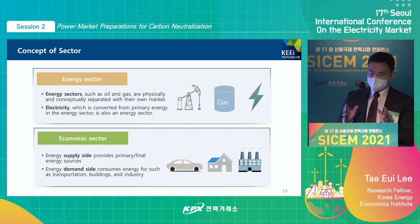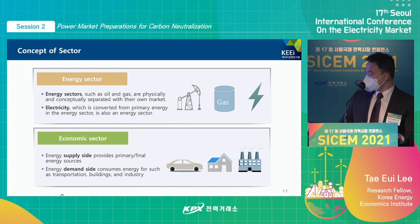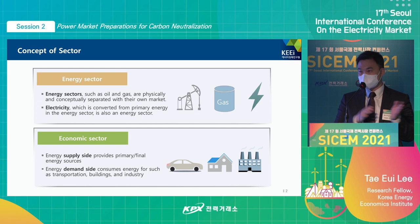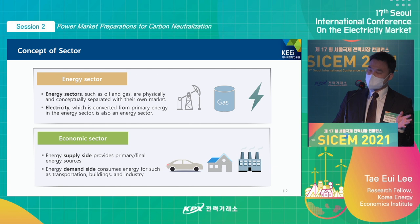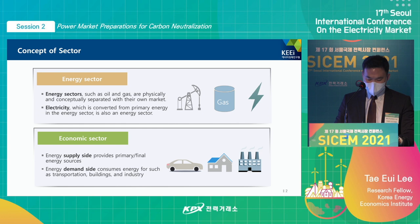So far, our energy sector has been centered around the upstream sector like oil and gas. The energy produced from oil and gas was converted to secondary energy and then transmitted to buildings and industries, or consumers receive the supply of primary energy. The energy system can be classified into various sectors. From an energy sector perspective, we have the energy sector including oil and gas, and supply and consumption are determined based on supply and demand of oil and gas. They are physically and chemically separated.